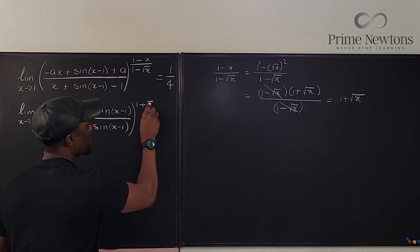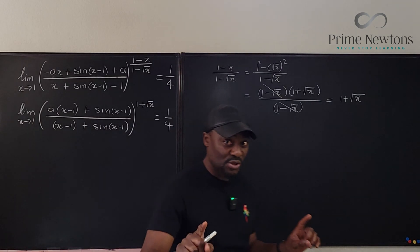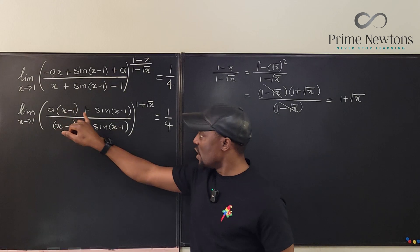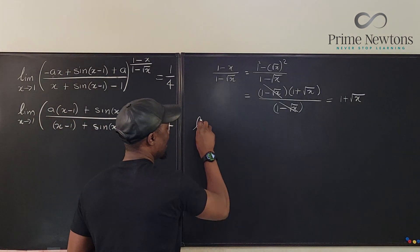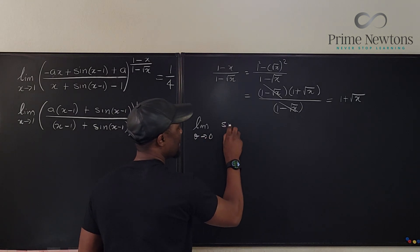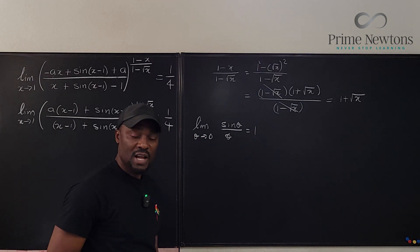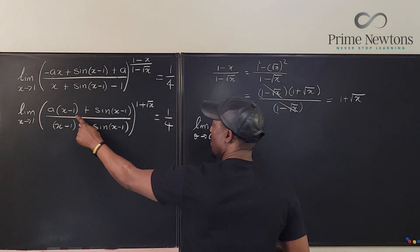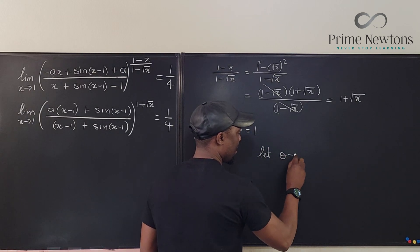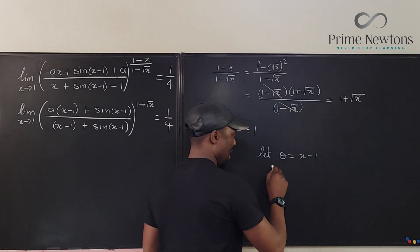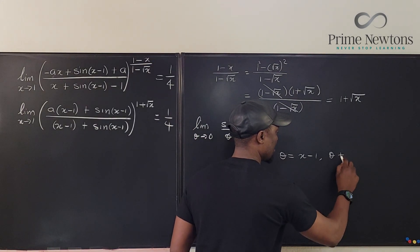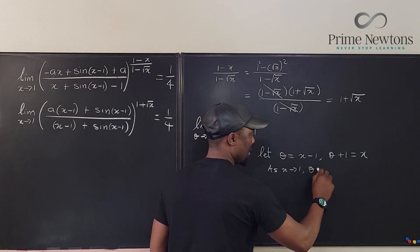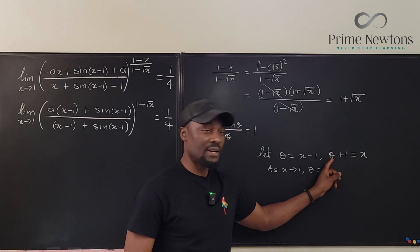So the exponent simplifies to 1 plus rad x, and this equals 1 over 4. Remember, the mission is to find a. Now there's one more adjustment I want to make. We know that the limit as theta approaches 0 of sin theta over theta equals 1. I intend to use that idea because it's super fast. So I'm going to replace x minus 1 with theta — let theta equal x minus 1, so that theta plus 1 equals x. Notice that as x goes to 1, theta goes to 0.